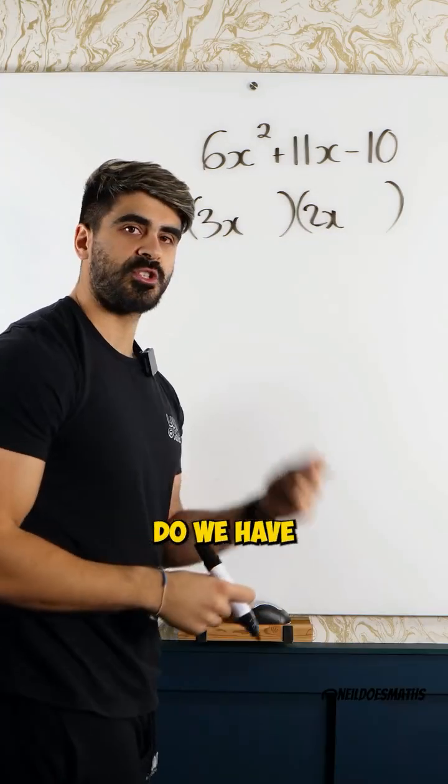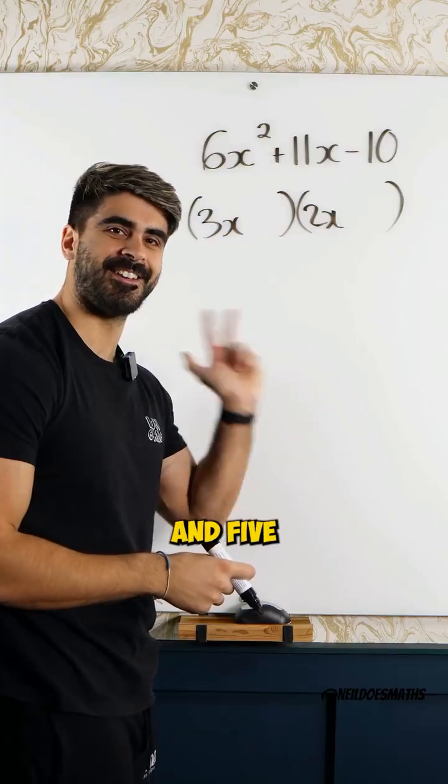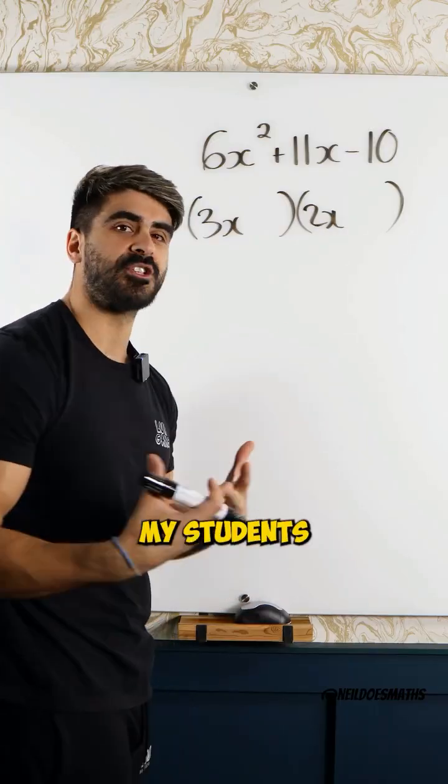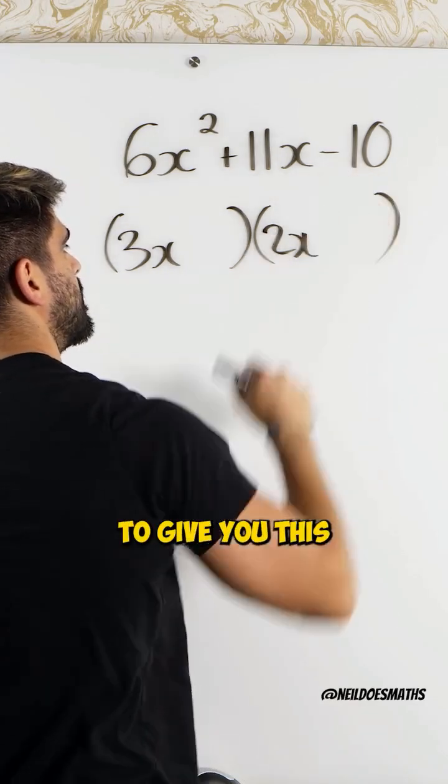For 10, what options do we have? 1 and 10, 2 and 5. Again, I tell my students to pick the options that are closest together because they're going to go here because they multiply to give you this.